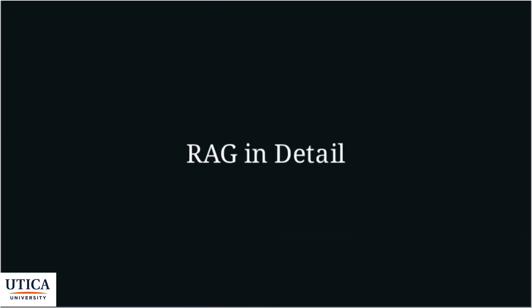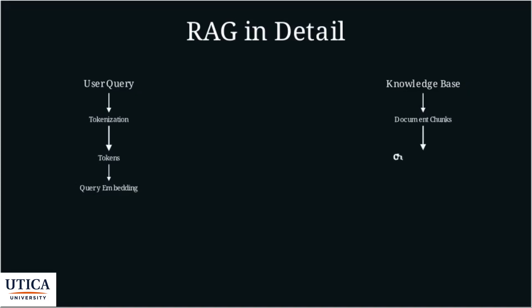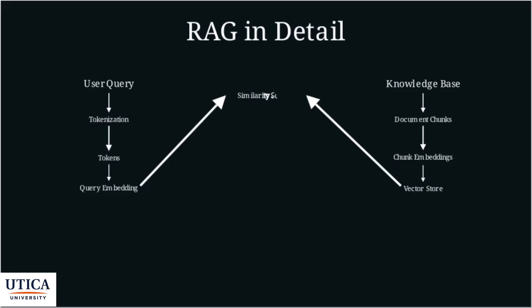Let's break down the entire RAG process step by step. It all starts with a user query. First, the query undergoes tokenization, where it's broken down into individual tokens. These tokens are then converted into a query embedding — a numerical representation of the query's meaning. On the other side, we have the knowledge base, which could be a collection of documents, articles, or any other source of information. The knowledge base is divided into smaller document chunks, and each chunk is converted into a chunk embedding. These chunk embeddings are stored in a vector store, a specialized database that allows for efficient similarity searches. The similarity search compares the query embedding to all the chunk embeddings in the vector store to find the most relevant pieces of information.